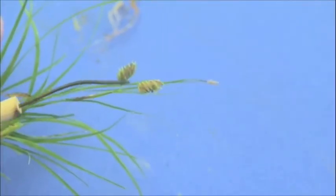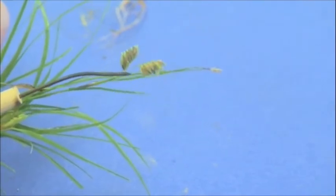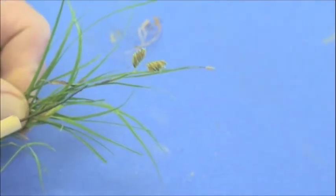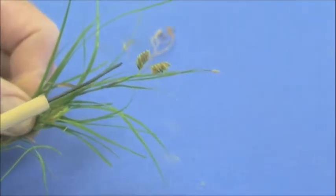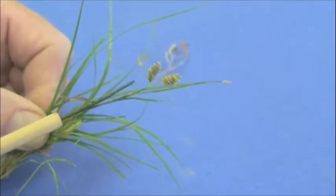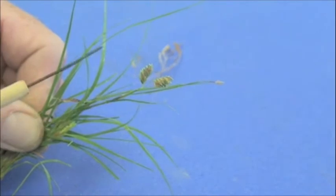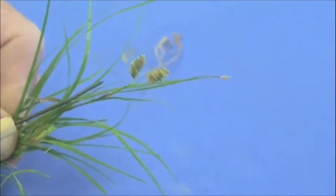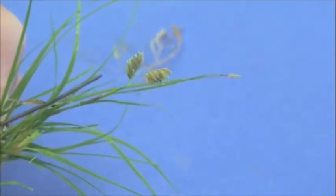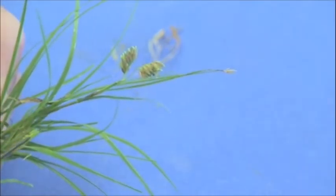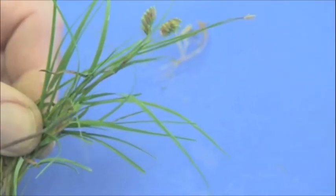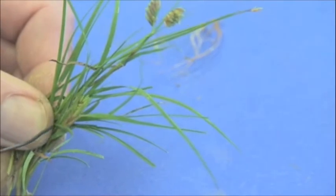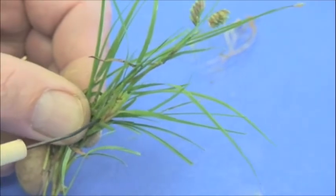So this is the staminate flower for buffalo grass, and generally when it begins to flower, you'll see this come up a couple inches above the canopy, and it's fairly noticeable on the surface canopy when buffalo grass is basically producing flowers. And then down at the base of the plant is where the pistillate flower will be located. It's almost like a burr that will form towards the base of the plant.